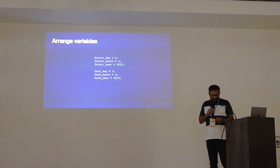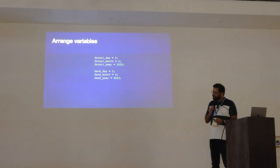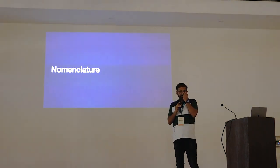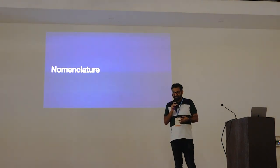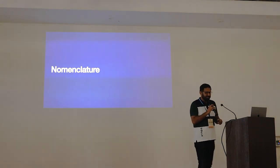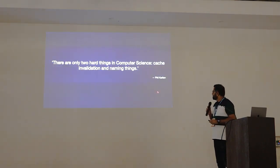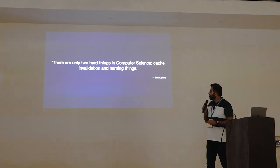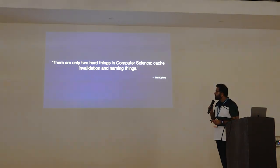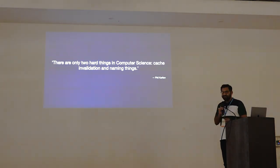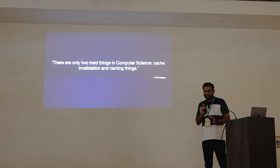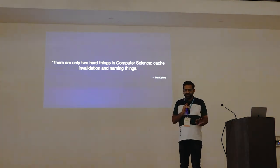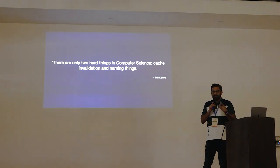We are done with appearance. Now let's see the next topic: nomenclature — naming things. This is one of the very famous computer science quotes: there are only two hard things in computer science — cache invalidation and naming things. Naming things is really tough. It seems easy, but it is not easy at all. How to name your classes, your variables, your files.